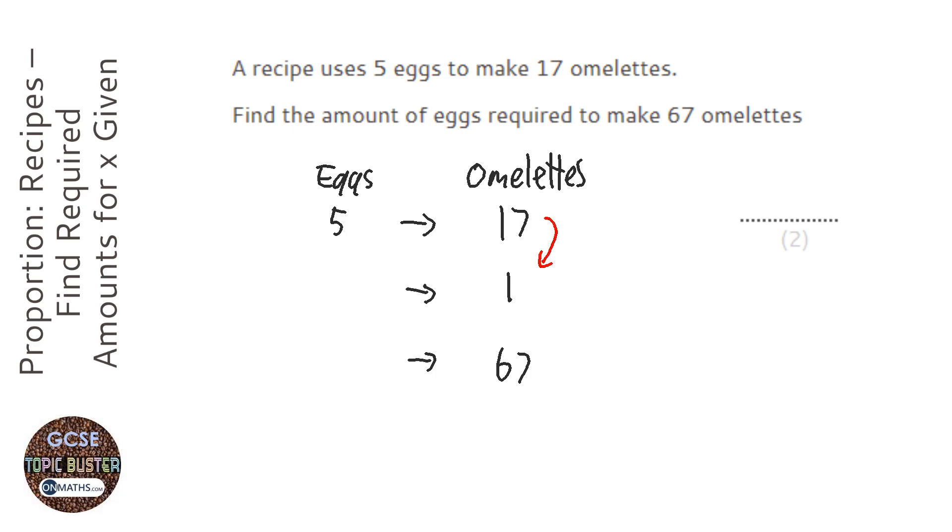So to get from 17 to 1, I divide by 17. And I'll do the same for this side. And then to get from 1 to 67, I times by 67.